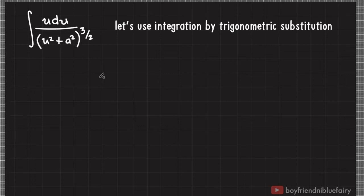Today, we will be looking for the solution of the integral of u divided by quantity u squared plus a squared, raised to 3 halves, using trigonometric substitution.